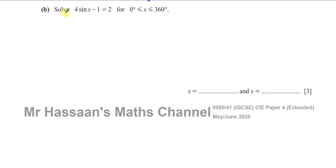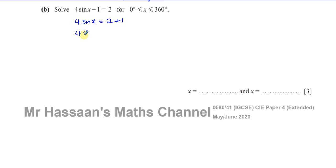For part B, it says solve 4 sine x minus 1 equals 2 for values of x between 0° and 360°. To solve a trig equation like this, we must first make sine x the subject. I'm going to add 1 to both sides, giving 4 sine x equals 3, and then divide both sides by 4, so sine x equals 3 quarters.